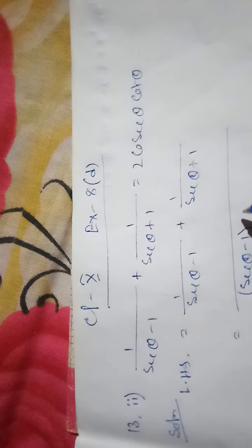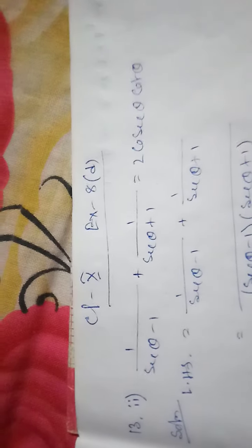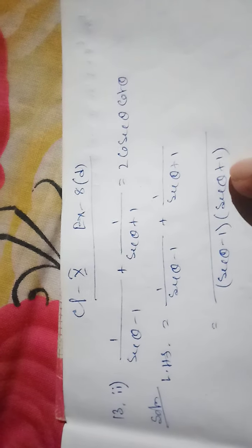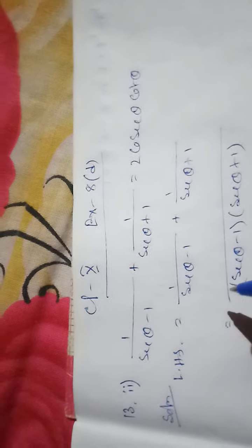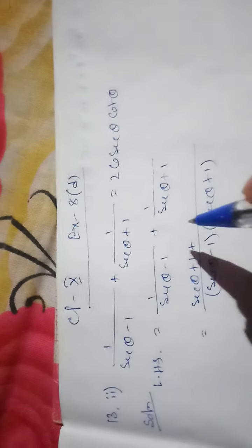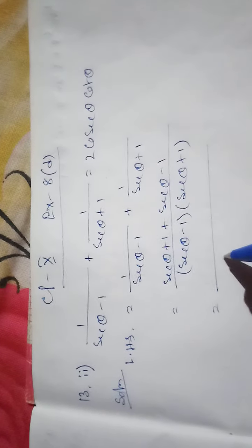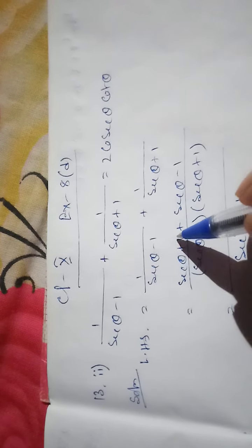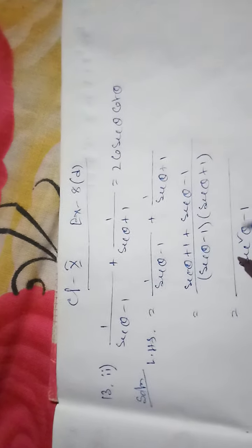The numerator becomes (secθ + 1) + (secθ - 1). The denominator is (secθ - 1)(secθ + 1). Using the identity (a - b)(a + b) = a² - b², we get sec²θ - 1 in the denominator. The numerator simplifies: +1 and -1 cancel, leaving 2secθ.